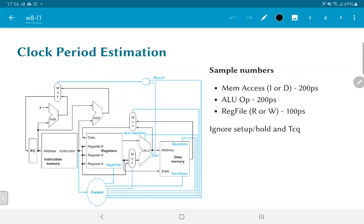Let us consider some sample numbers. Assume that a memory access from either instruction or data memory takes 200 picoseconds from the time the address is made available. Similarly, assume that an ALU operation takes 200 picoseconds, and either a read or write in the register file takes 100 picoseconds. This is a simplification, but it is an illustrative set of numbers to show how the clock period could be determined and the potential problems that arise. We will also ignore setup and hold times for sequential elements and the TCQ clock-to-queue output delay.